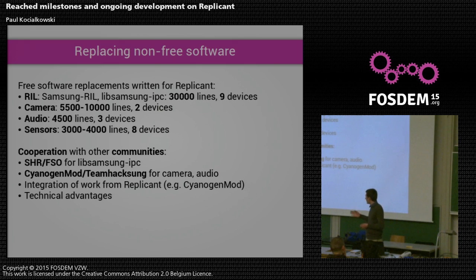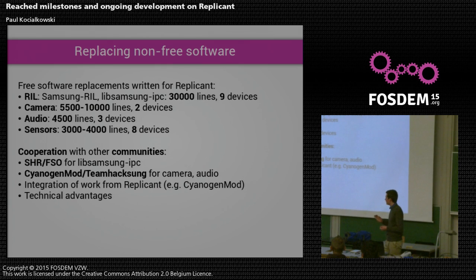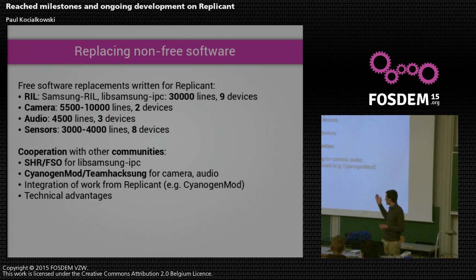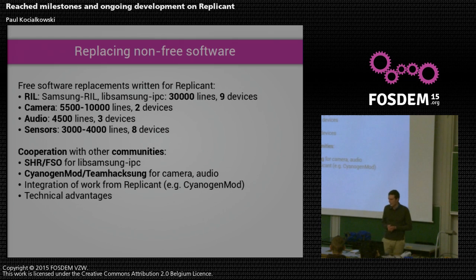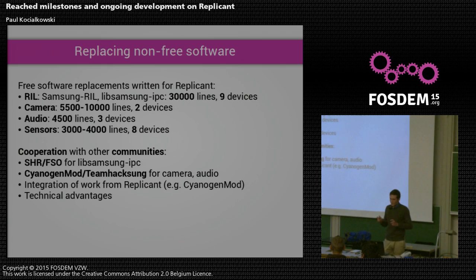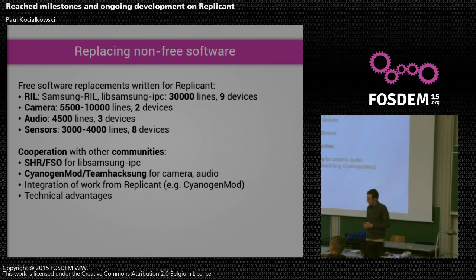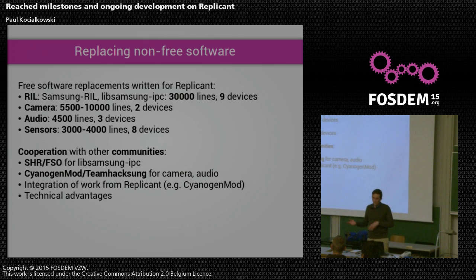SHR is an operating system initially written for the OpenMoco — a GNU/Linux mobile operating system. They wanted to get it running on Samsung devices, so they contributed to LibSamsung IPC. We also have other community Android versions such as CyanogenMod, Omni, and TheMuppets, a specialized team working on Samsung hardware. All of those were interested in the camera and audio parts, which we wrote for Samsung devices. That work is usually shared between CyanogenMod and Replicant — when I write something for Replicant and CyanogenMod people are interested, they take it, and we share patches. For them, even if they're not interested in a fully free software stack, it's also a great technical advantage.